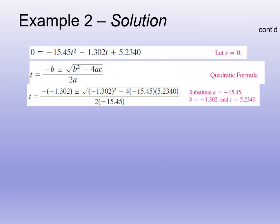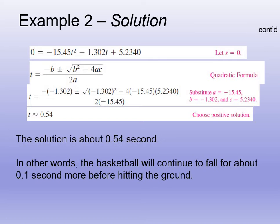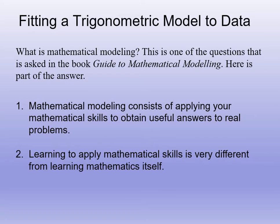The coefficients: A is going to be negative 15.45, B is going to be negative 1.302, and C will be 5.2340. Substitute those into the quadratic formula. We should get that T is approximately 0.54. So at 0.54 seconds, there's a negative answer as well, but we don't use negative time. At 0.54 seconds, that's when the ball is at zero height. The basketball is going to continue to fall for about 0.1 seconds before hitting the ground.